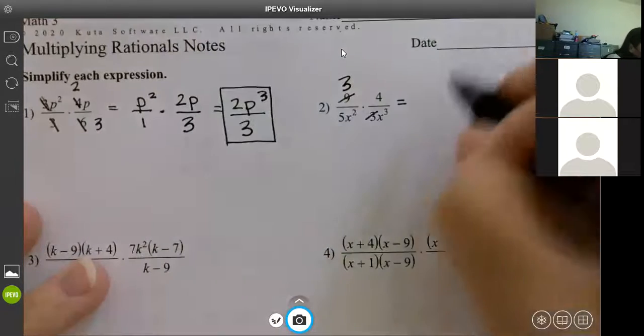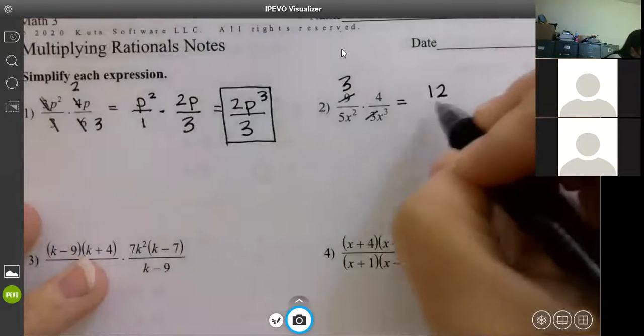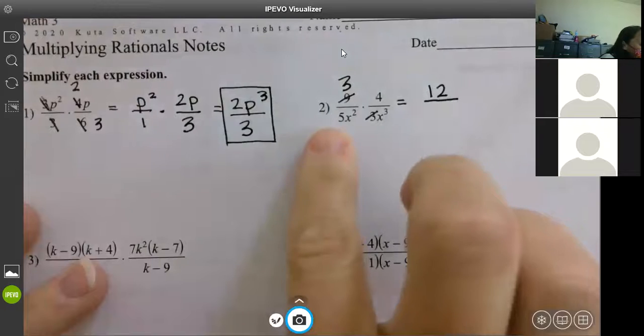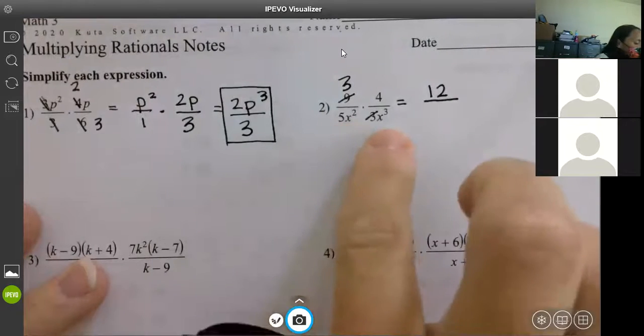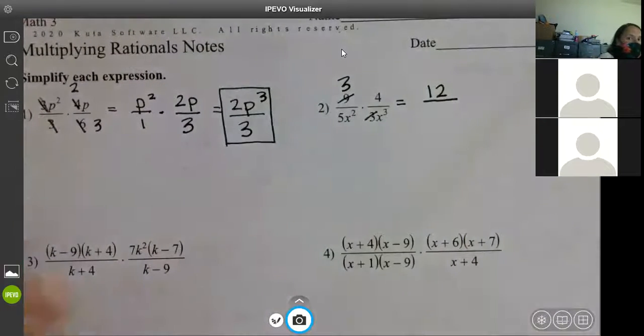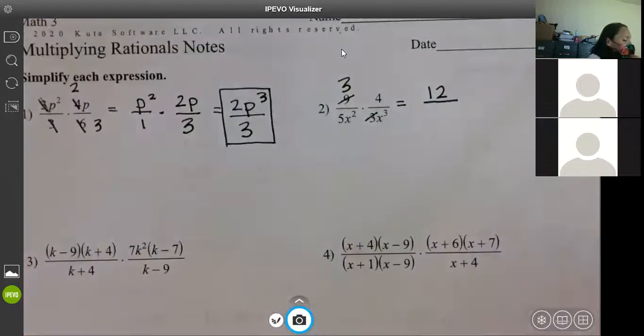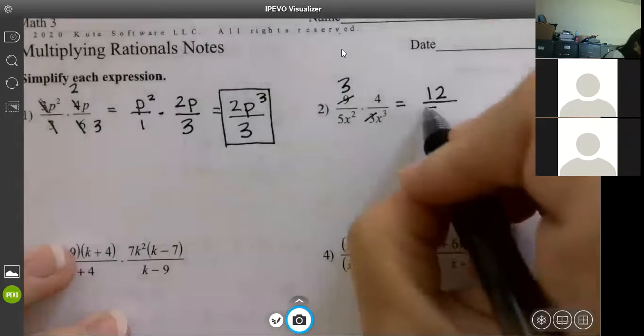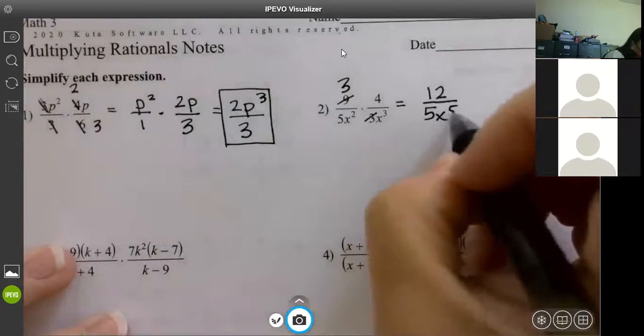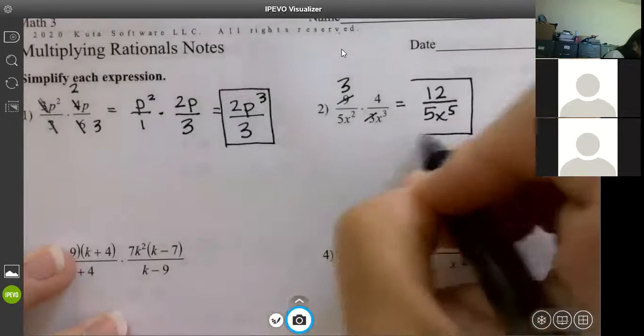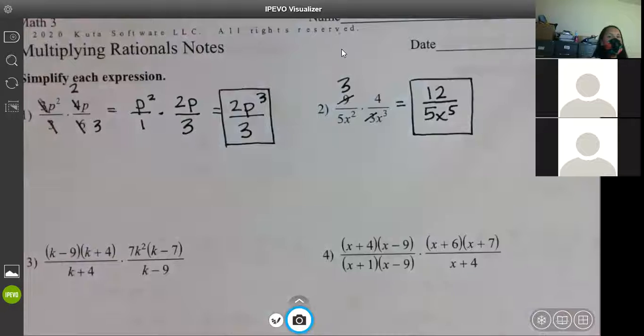Push it together. What's three times four? Twelve. On the bottom, five X squared times X cubed. Five X to the fifth. Perfect. That's it. That's all you're doing. So just reducing as much as possible.